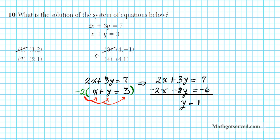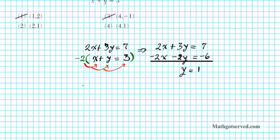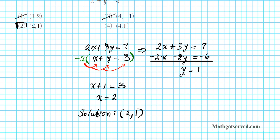To get x, we substitute the value of y equals 1 into the equation that is easiest to isolate x — since the second equation has x by itself, we use that. We know x plus y equals 3, so x plus 1 equals 3. Subtracting 1 from both sides gives x equals positive 2. Our solution in ordered pair notation is x equals 2 and y equals 1. The final answer is option number 2.